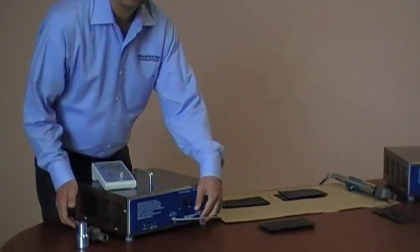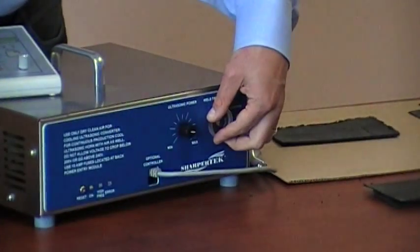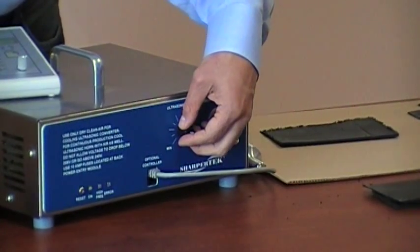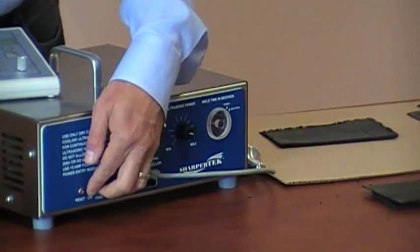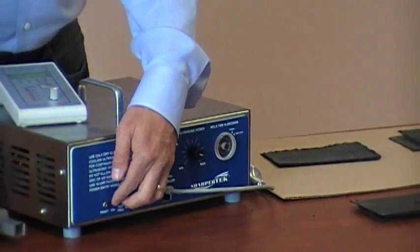With the SharperTech handheld welder we have time adjustment controls and we have power adjustment controls, and on the front panel we have LED display lights.